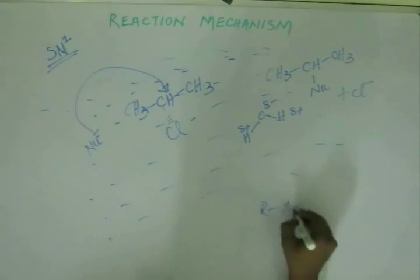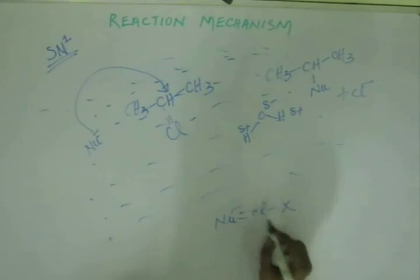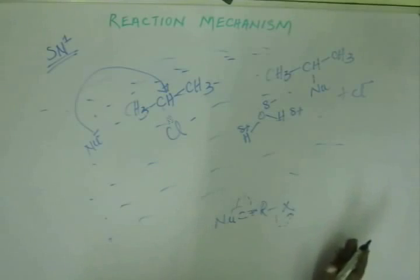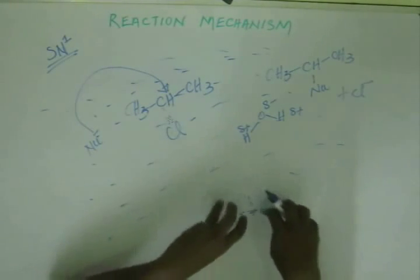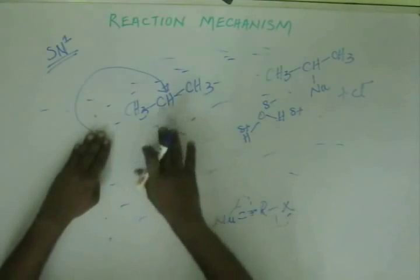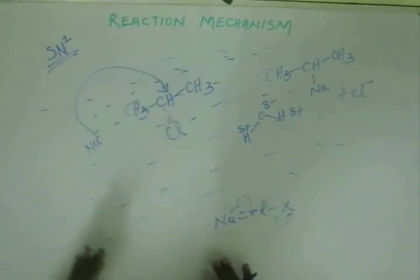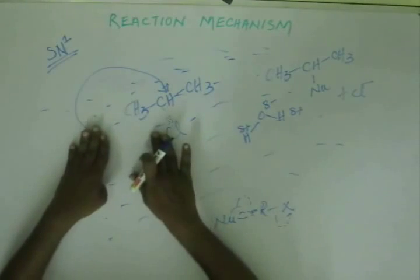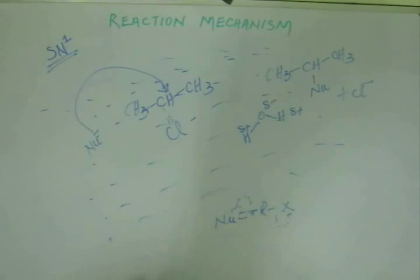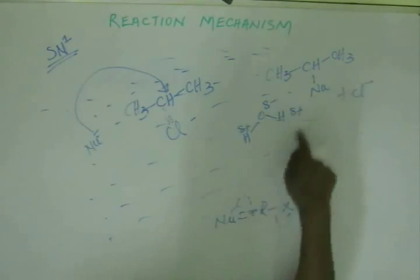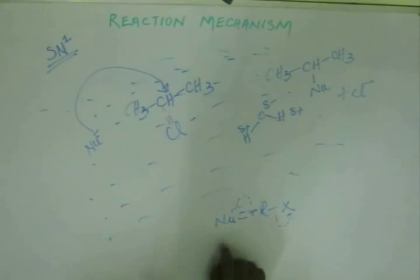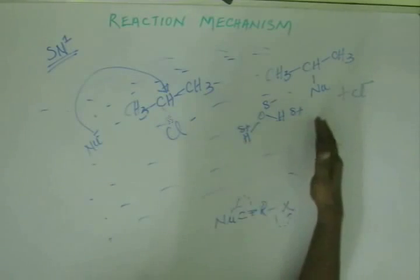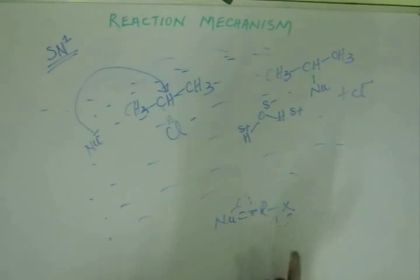In SN2, there was only one step — the nucleophile put its electron into the anti-bonding orbital while simultaneously the leaving group left, so two molecules (substrate and nucleophile) were present in the RDS — bimolecular. Here in SN1, the leaving group moves out first and then the nucleophile comes in, so only one molecule is present in the RDS — unimolecular. SN1 and SN2 refer to molecularity: the number of molecules in the RDS. SN1 doesn't mean one step — in fact SN1 has two steps. SN2 means bimolecular and is a concerted single-step reaction.